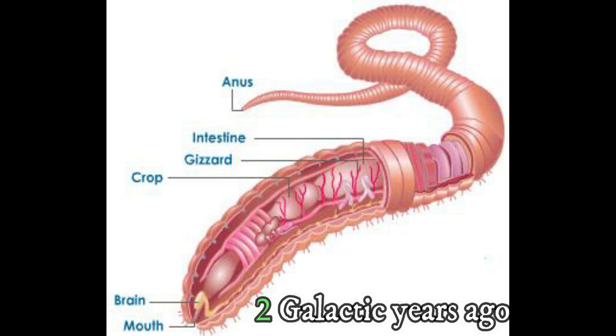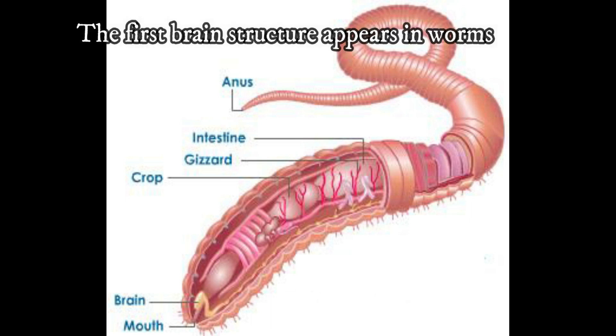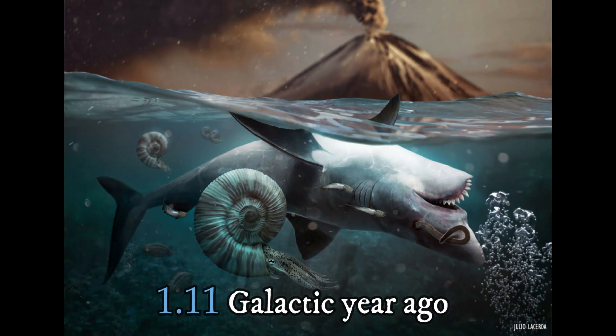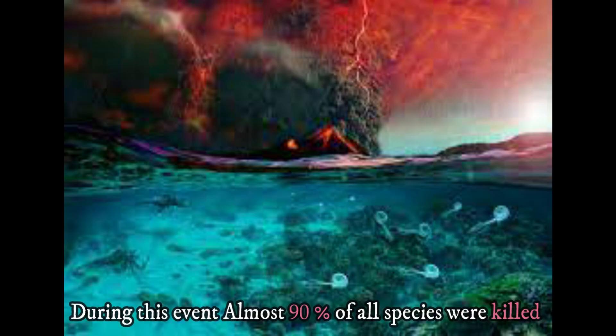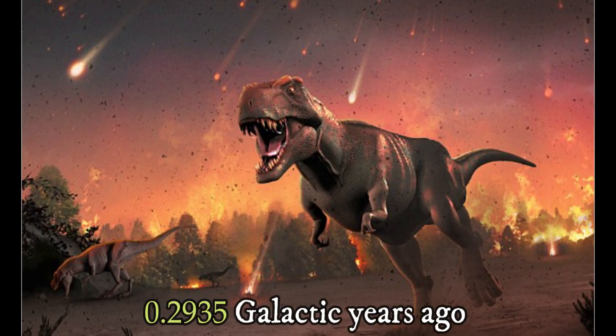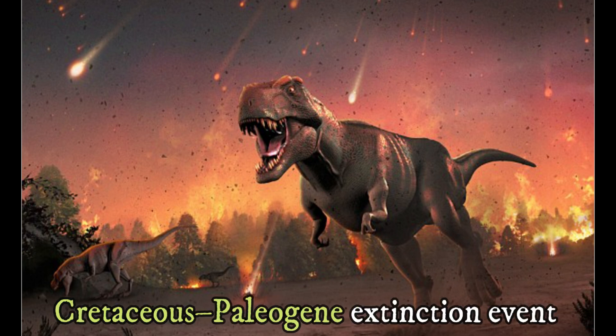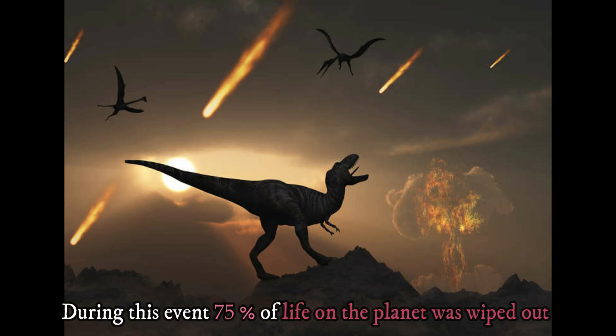2.4 galactic years ago, the Cambrian explosion occurs, meaning different types of plants, animals, and fungi appeared. Two galactic years ago, the first brain structure appears in worms. 1.11 galactic years ago, Permian-Triassic extinction event. During this event, almost 90% of all species were killed. 0.2935 galactic years ago, Cretaceous-Paleogene extinction event. During this event, 75% of life on the planet was wiped out.